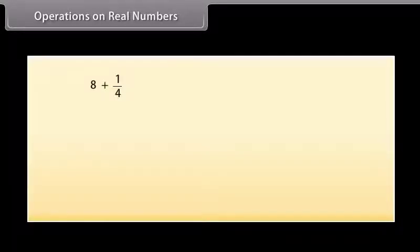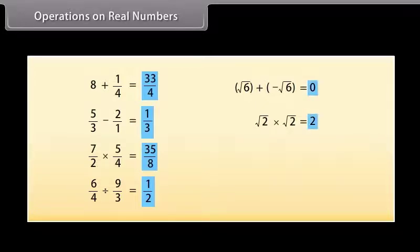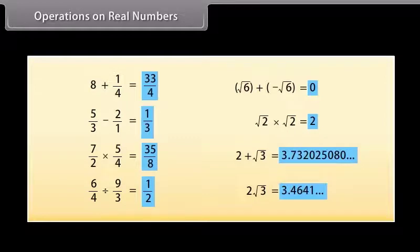Operations on real numbers. Can you tell what we get if we add, subtract, multiply or divide two rational numbers? We will get a rational number. But if we add, subtract, multiply or divide irrational numbers, the number we get is not always irrational. Now think: what do we get if we add or multiply a rational number with an irrational number? The answer is an irrational number. Let us go through some examples.